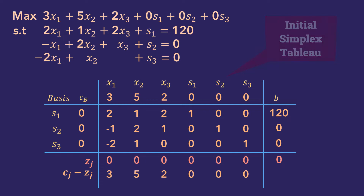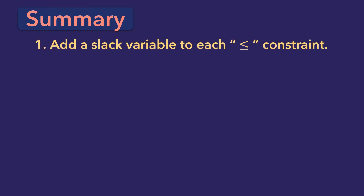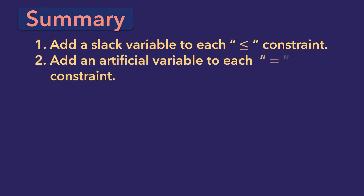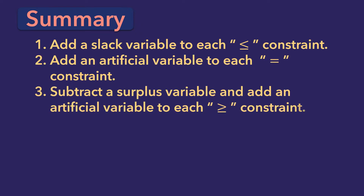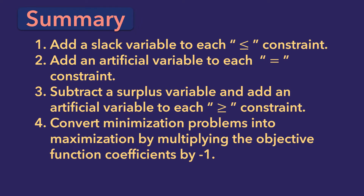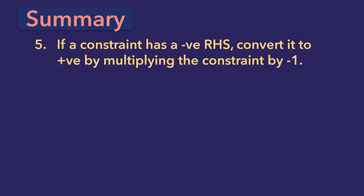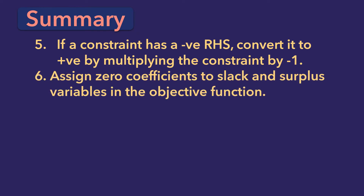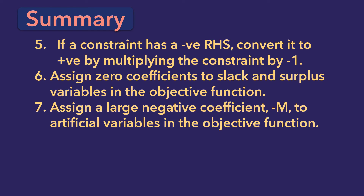In summary, the key points in setting up the initial simplex tableau are as follows. 1. Add a slack variable to each less-than-or-equal constraint. 2. Add an artificial variable to each equal-to constraint. 3. Subtract a surplus variable and add an artificial variable to each greater-than-or-equal constraint. 4. Convert minimization problems into maximization by multiplying the objective function coefficients by minus 1. 5. If a constraint has a negative right-hand side, convert it to positive by multiplying the constraint by minus 1. 6. Assign zero coefficients to slack and surplus variables in the objective function. 7. Assign a large negative coefficient, minus m, to artificial variables in the maximization objective function.